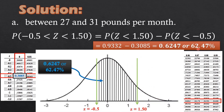This is the representation of generating newspaper between 27 and 31 pounds per month. We have negative 0.5 for x equals 27, and positive 1.5 for x equals 31 pounds. The probability in between is 0.6247, or 62.47 percent.